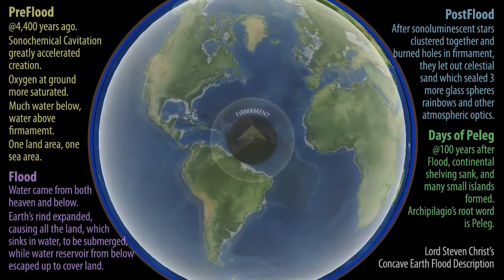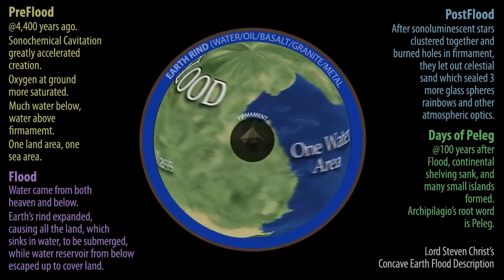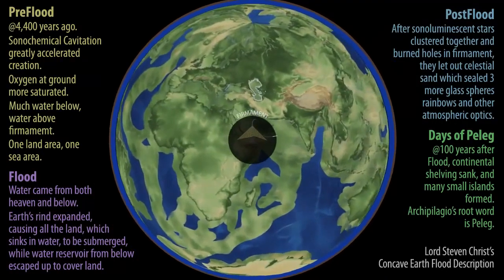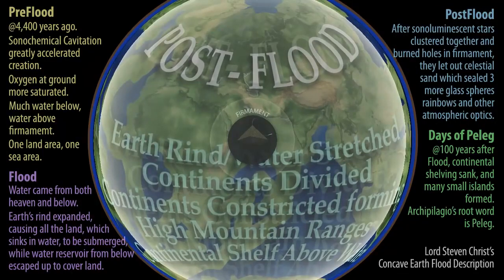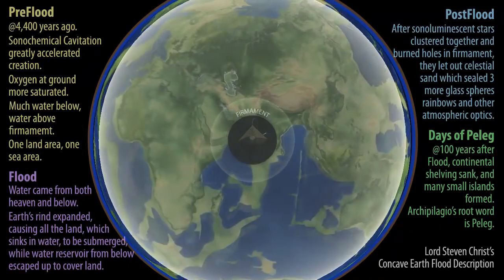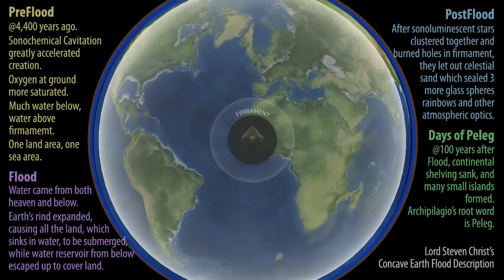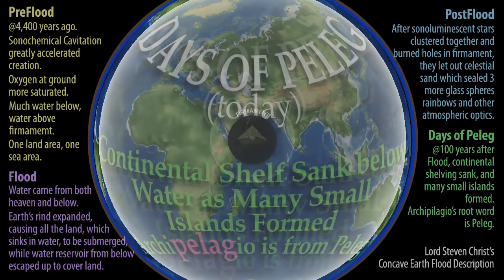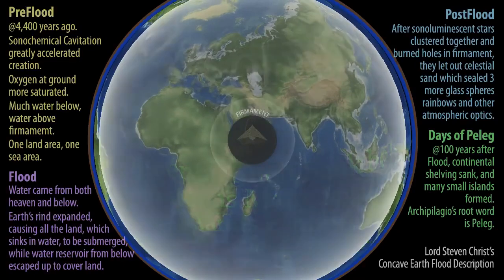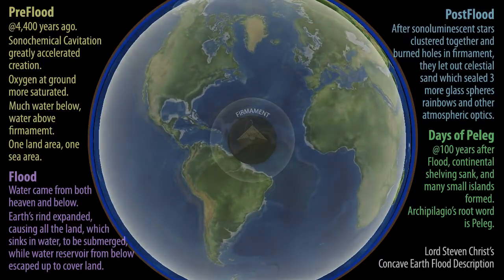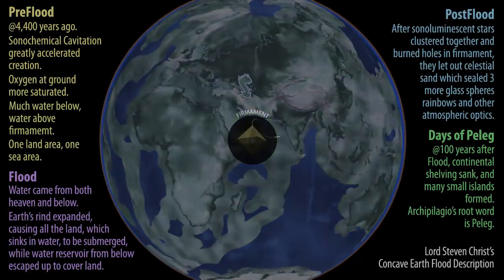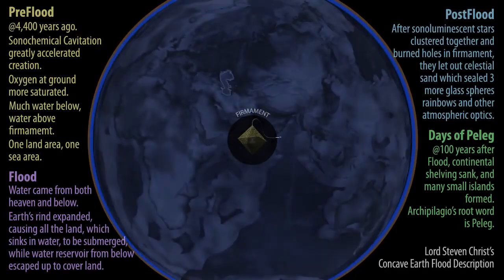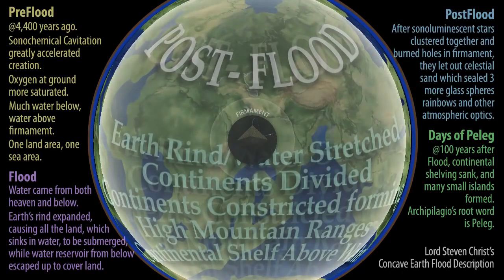After the flood, we still had continental shelving. We don't see the continents as we see them today, but if you look at maps on Google you can find the oceanic tracings of the deeps and lows within the ocean, giving a good understanding of how to formulate the continental shelf. It is recorded in Scripture that the days of Peleg happened — Peleg lived about 100 years after the flood. The word 'archipelago' comes from the word Peleg, meaning a group of small islands. That's what happened when it says the earth was divided in the days of Peleg.